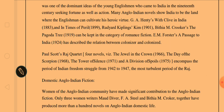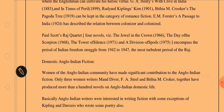Then we have Paul Scott's Raj Quartet — four novels: The Jewel and the Crown (1966), The Day of the Scorpion (1968), The Tower of Silence (1971), and The Division of Spoils (1975). These novels encompass the period of the Indian freedom struggle from 1942 to 1947, the most turbulent period of the Raj.